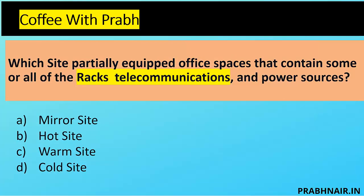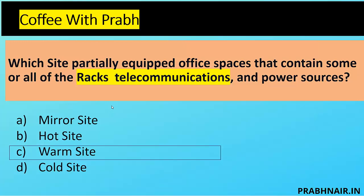Question 4: Which site is a partially equipped office space that contains some or all racks, telecommunications, and power source, but no servers? Options A and D are removed. The thin-line difference between hot site and warm site is that hot site has servers. The question states there are only racks — no servers. We need to move servers and data to make it operational. That describes a warm site. Answer is warm site.